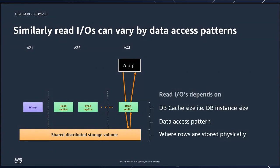Many customers also consume read IOs based on their application patterns. Aurora has a cache and your frequently accessed data is stored there. But some customers might be reading data from Aurora's shared storage volume — what we consider cold data — that they don't access frequently but need for their application. In this situation, your read operations would be higher than average. Similarly, your database instance size dictates how big your cache is. A smaller database instance leads to a smaller cache, meaning you go to the shared distributed volume more often than average.